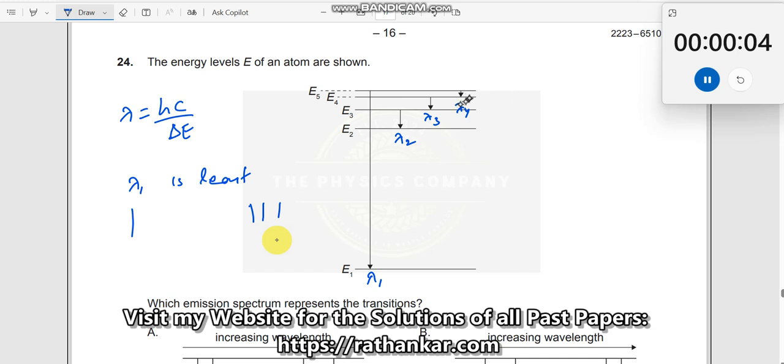Why? Because the energy gap is very small. If this becomes very small, lambda becomes much larger. Therefore, lambda 4 should be the highest.